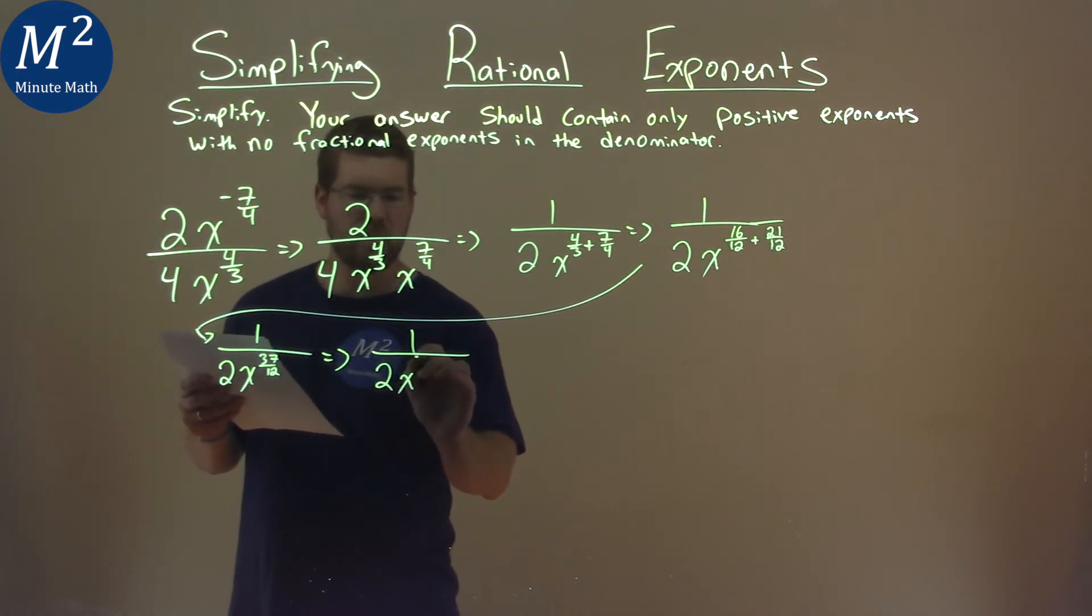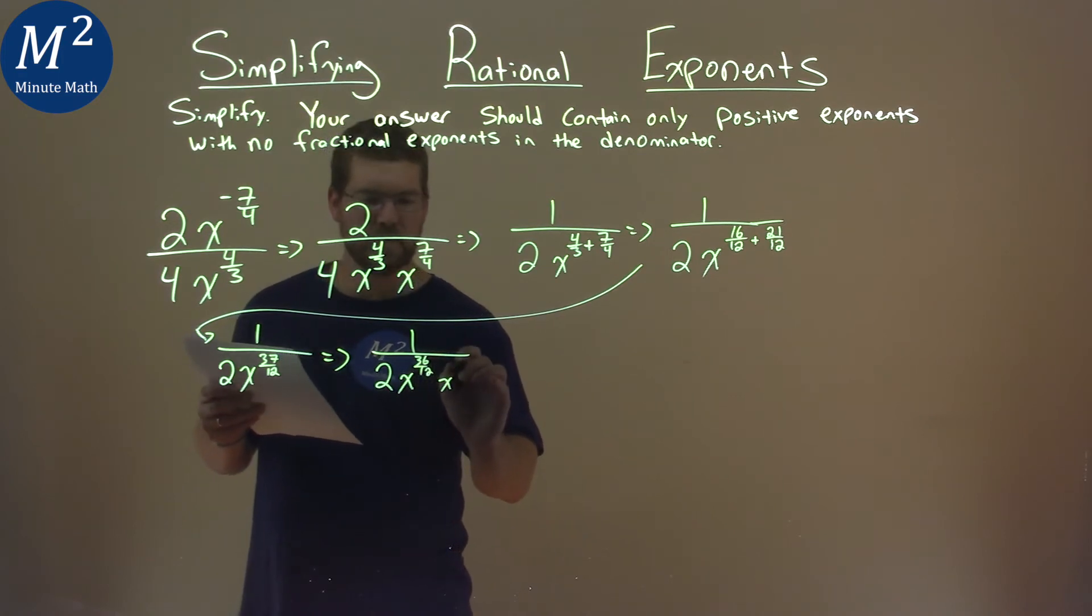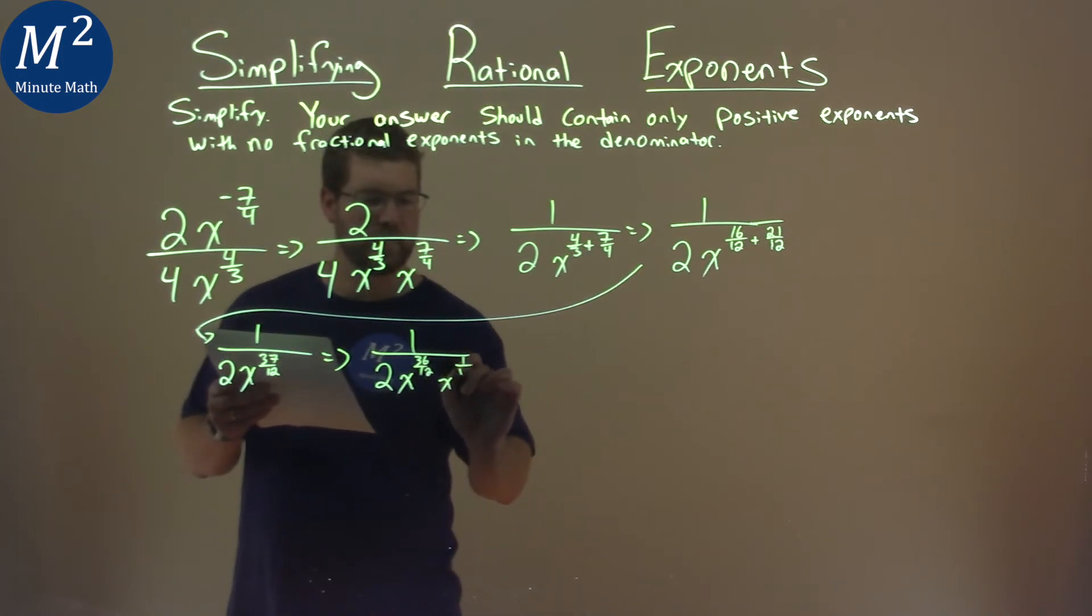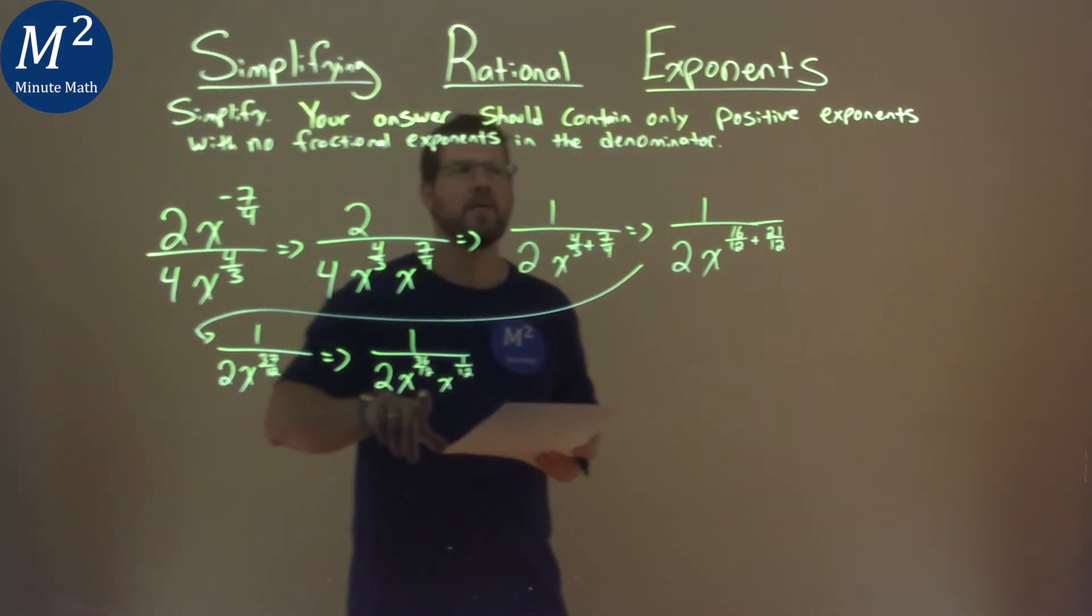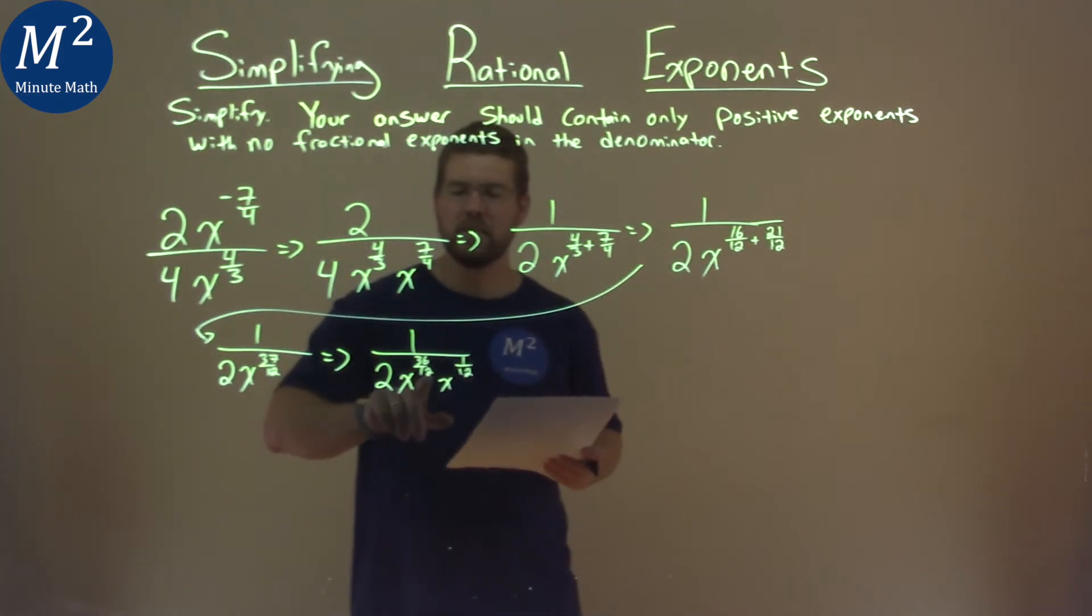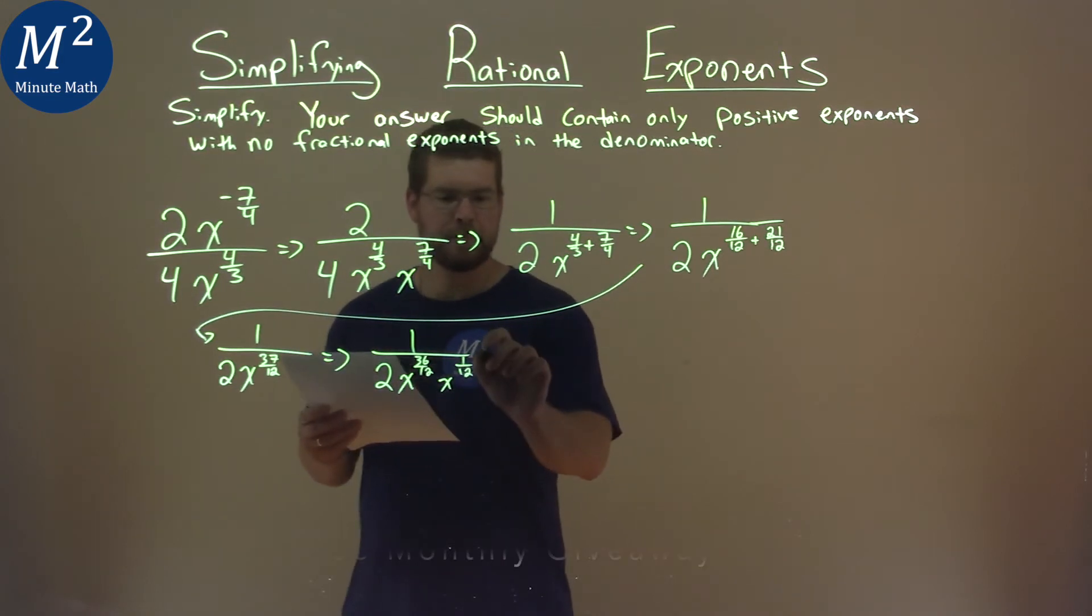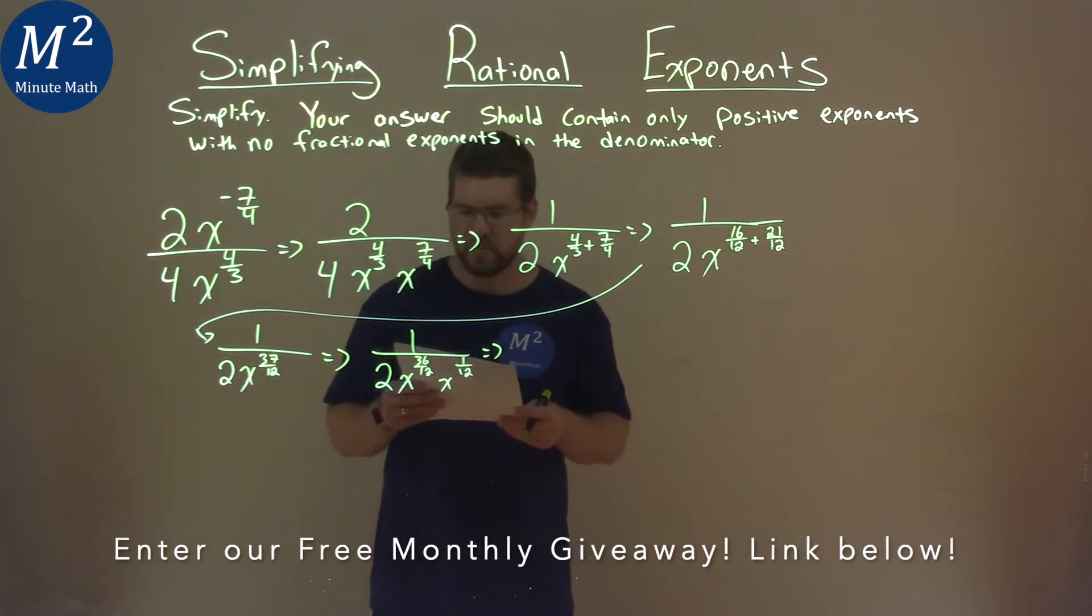So we have 1 over 2 times x to the 36th power over 12, and then we have x to the 1 twelfth power. This is a little tricky here because what we're going to try to do is, we know that 36 over 12 will simplify pretty easily, and we're trying to get no fraction in the denominator for the exponent.